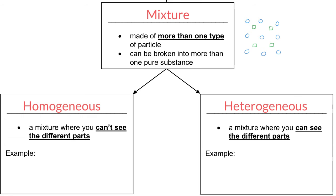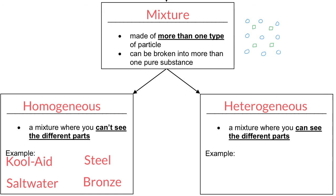Some examples of a homogeneous mixture would be Kool-Aid, or salt water, or even mixtures of metals called alloys — steel is an example, a mixture of iron and carbon, or bronze, a mixture of copper and tin — you can't see the copper separate from the tin. Also, basically any mixture of metals in jewelry. Heterogeneous mixtures, on the other hand, include things like a salad, where you can see the different parts, or salad dressing, where you can see the little bits floating around.